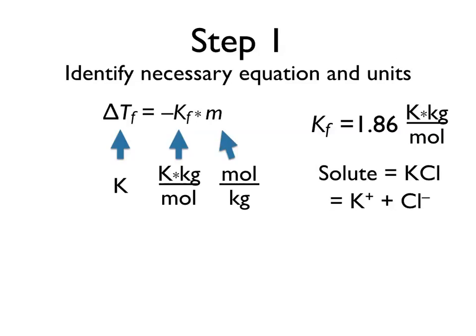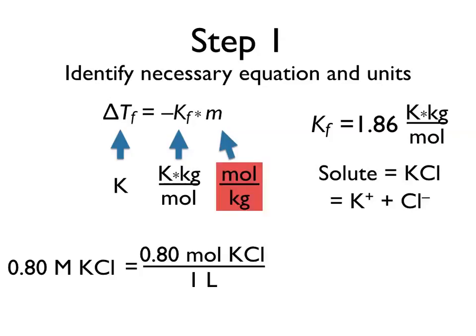If we go back to our question, we'll note that the concentration of this potassium chloride solution was given to us in terms of molarity, 0.80 molar KCl, which is 0.80 moles of KCl per 1 liter of solution. However, for us to determine our freezing point depression, we need to know our concentration in molality. So before we go any further, we have to determine a way to get our molarity into molality.